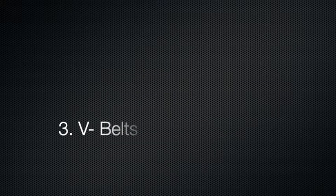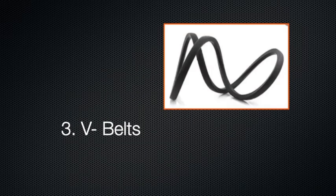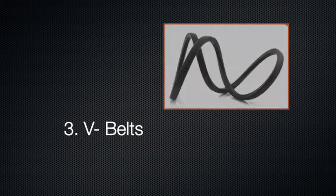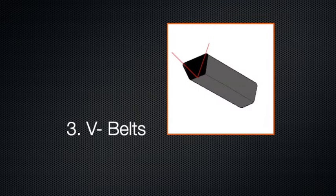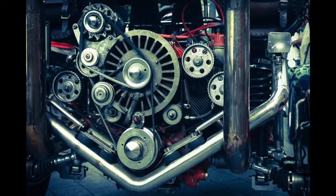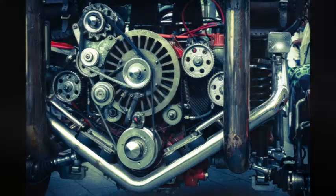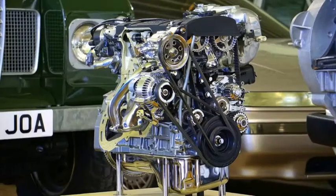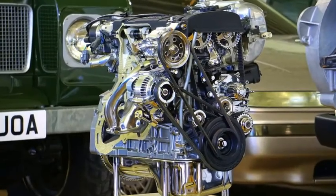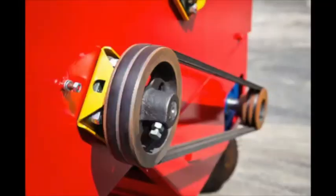3. V-belts are trapezoidal in shape, and unlike flat and round belts, offer a slip-resistant, high-speed power solution. Commonly used in automotive applications where heavy loads are present. A heavy load will force the belt to wedge into the pulley, resulting in higher transmission efficiency.